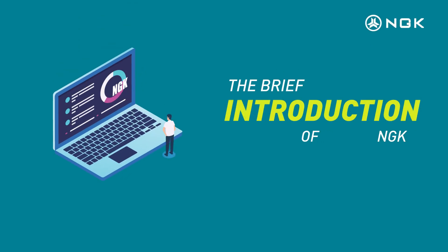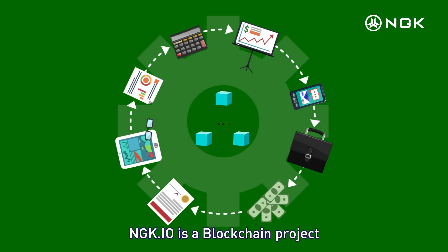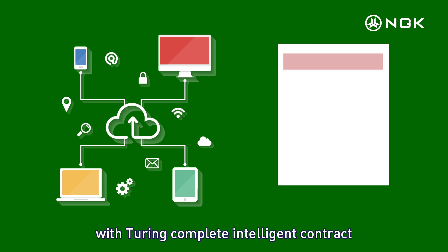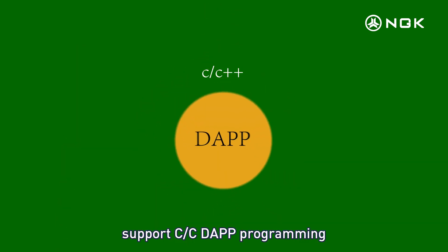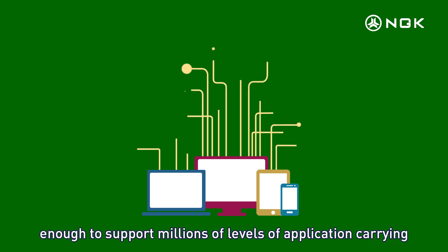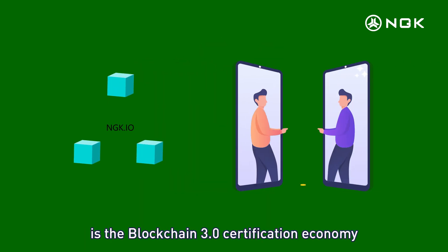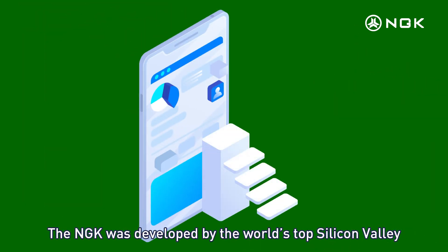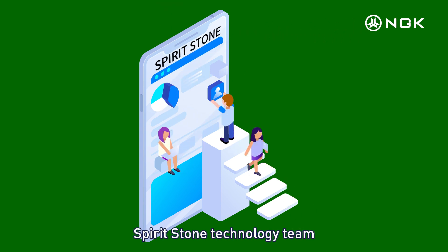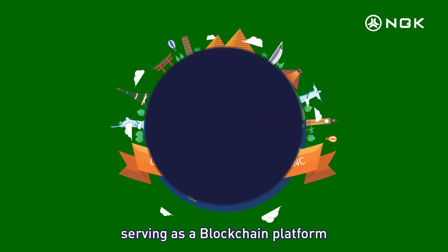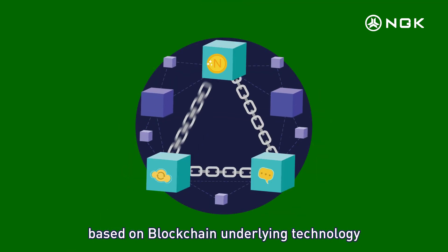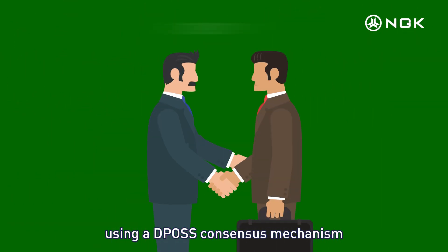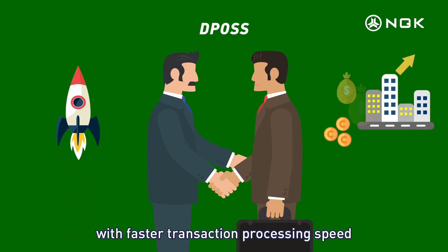NGK.io is a blockchain project. The underlying technology is released through open source with Turing Complete Intelligent Contract, supporting CC-DAP programming with strong processing capacity, enough to support millions of levels of application carrying. It is the blockchain 3.0 certification economy representative masterpiece. NGK was developed by the world's top Silicon Valley Spiritstone technology team, sponsored by USA International Covenant, serving as a blockchain platform based on blockchain underlying technology. It achieves a fully decentralized governance structure using a DPoS consensus mechanism with faster transaction processing speed and business value.